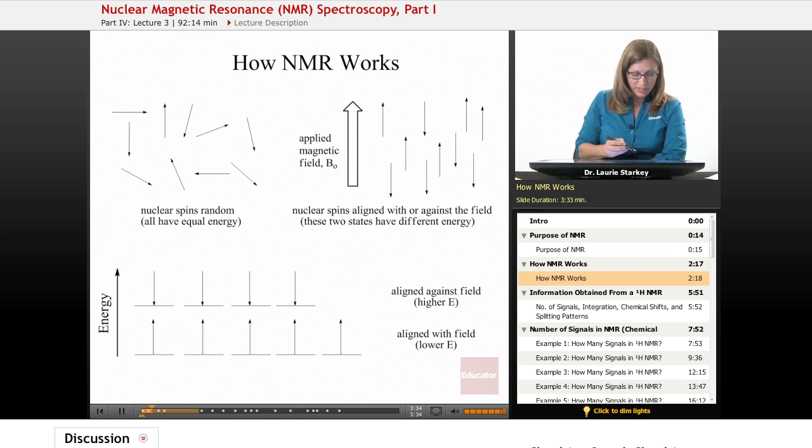These two states have different energies. The ones in which they're aligned with the field, we describe that as the alpha spin state, and those are lower in energy. Those that are aligned against the field are described as beta, and those are higher in energy. The populations of nuclei in these two states is very similar, but there is a slight excess of the nuclei with the alpha spin state where they're aligned with the magnetic field.